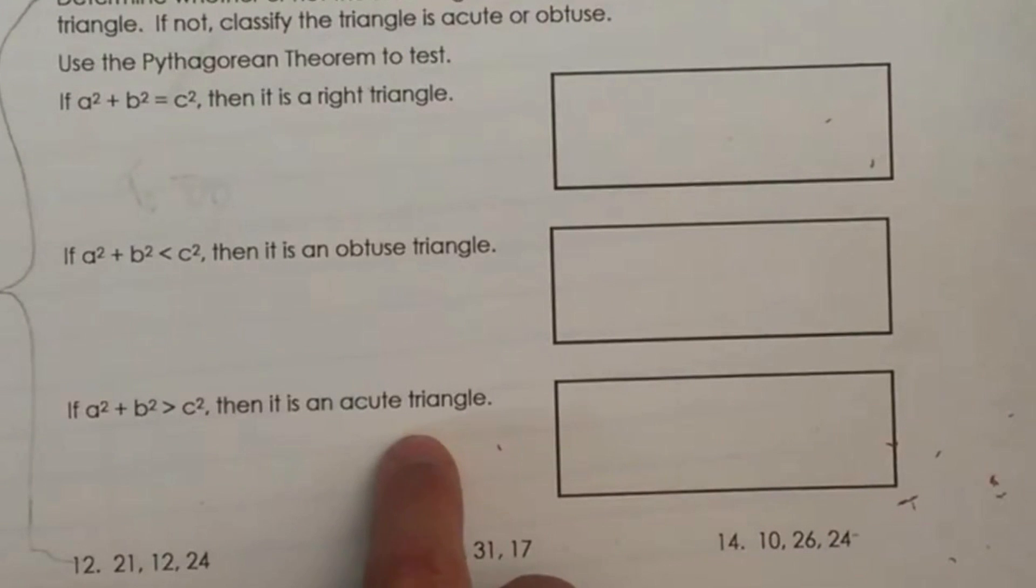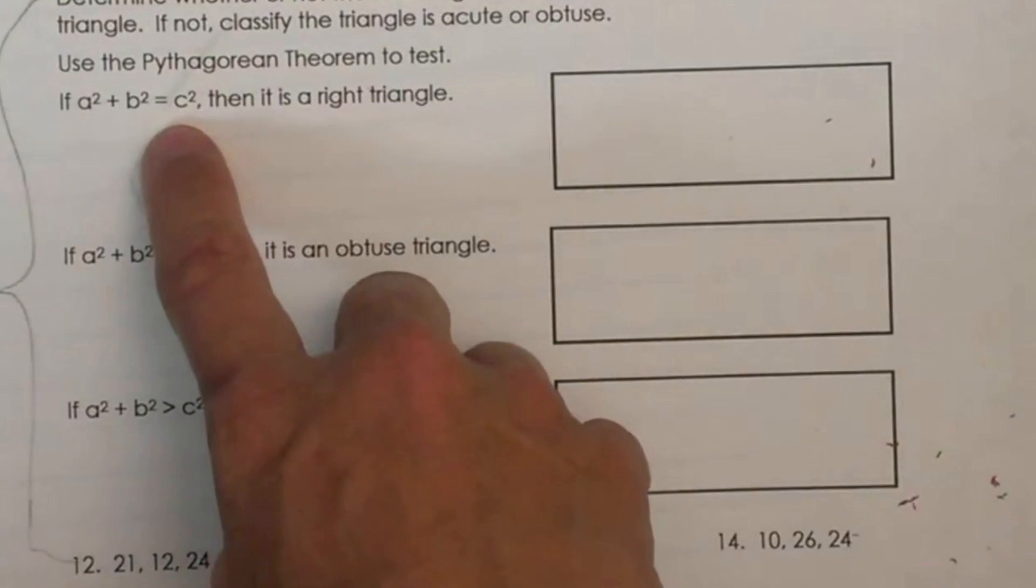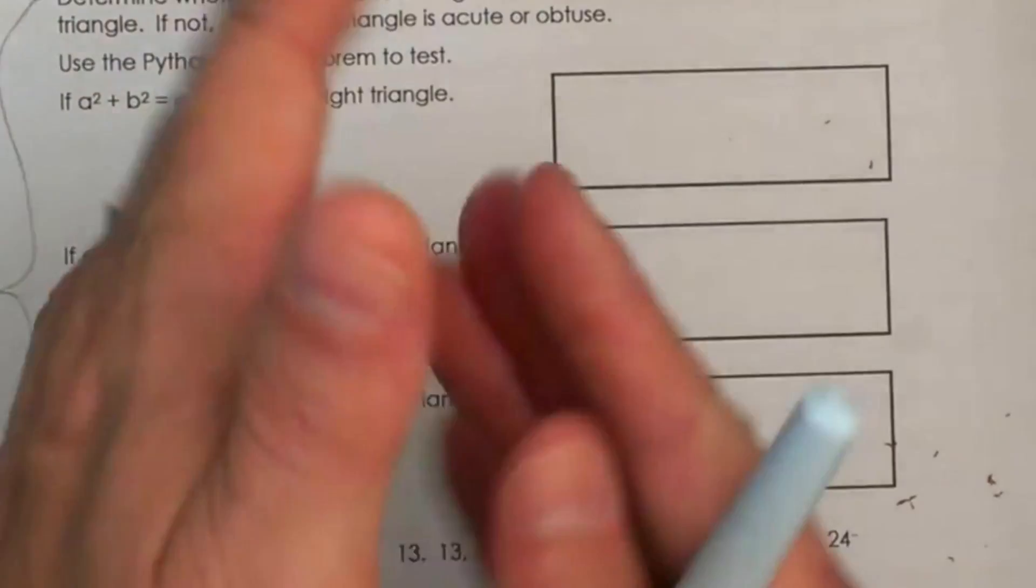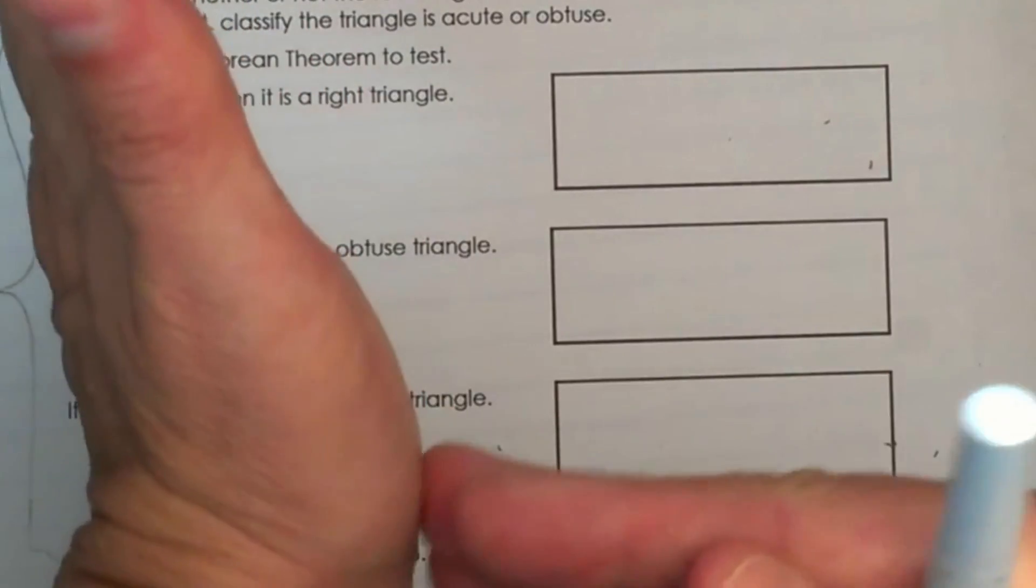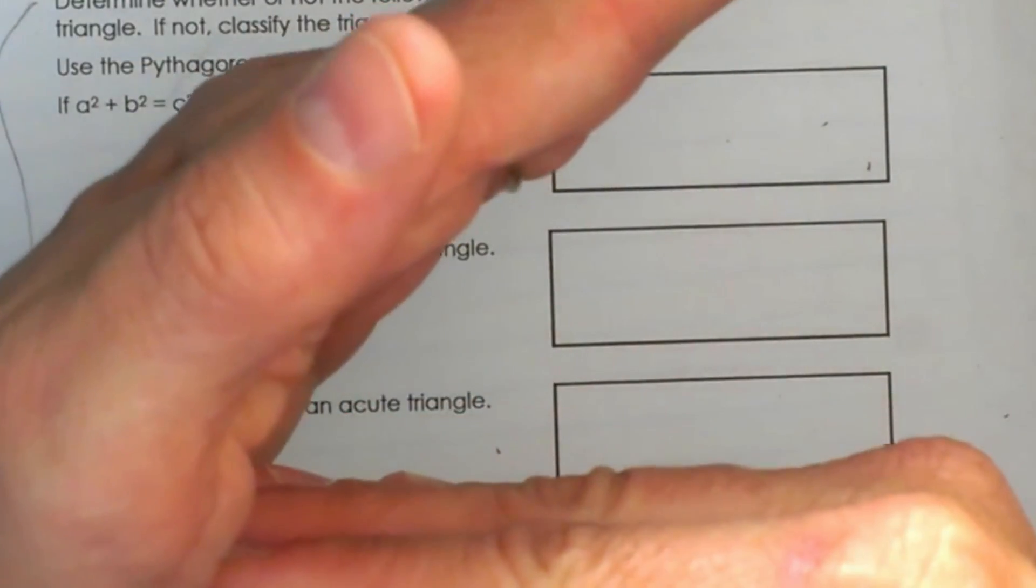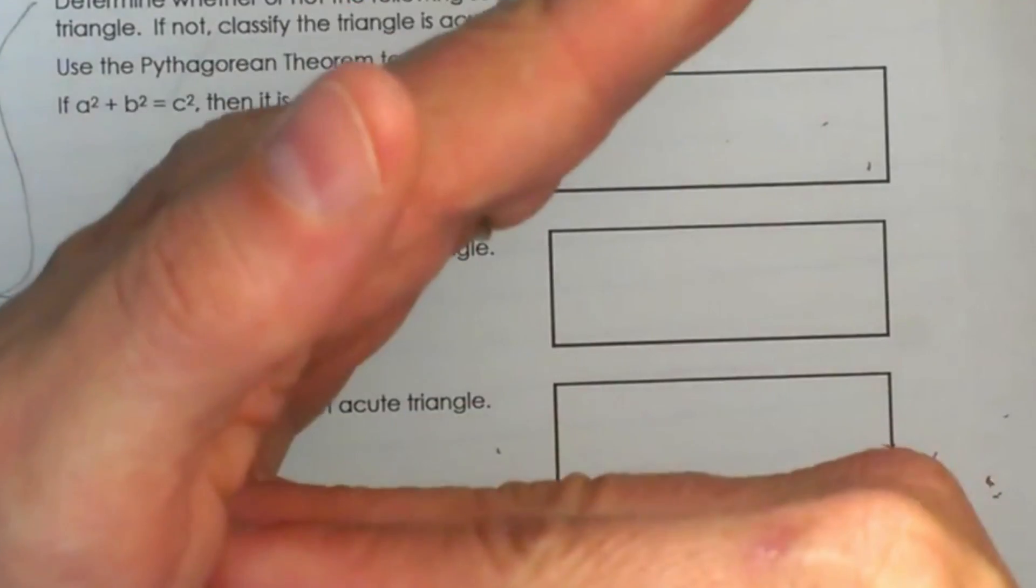So what I always like to focus on is the C squared. If C squared is equal, it is right. If C squared is greater than, we have obtuse because remember an obtuse angle is greater than 90 degrees. And if C squared is less than A squared plus B squared, we know we have an acute triangle.